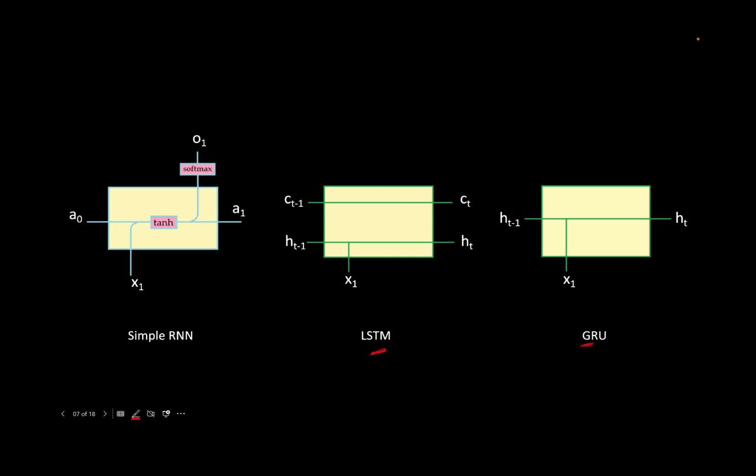If you watched my previous video on LSTM, you would know that LSTM helps solve this problem because LSTM has both long-term and short-term memory. GRU is similar, but instead of having two separate memory states — one long-term and one short-term — in GRU, both long-term and short-term memory are combined into one single hidden state. Thus GRU is like a lightweight version of LSTM, which takes less computational power compared to LSTM.